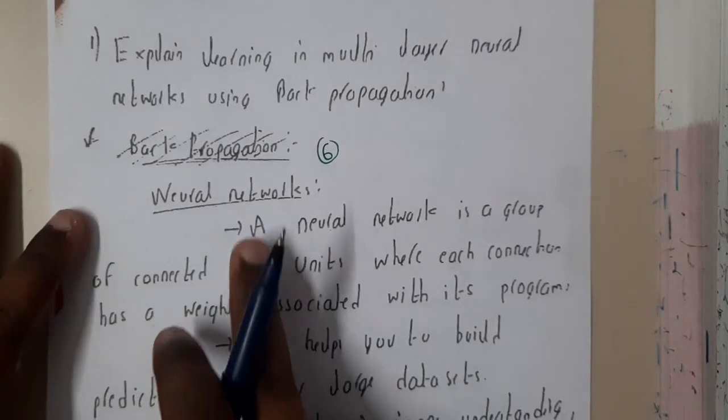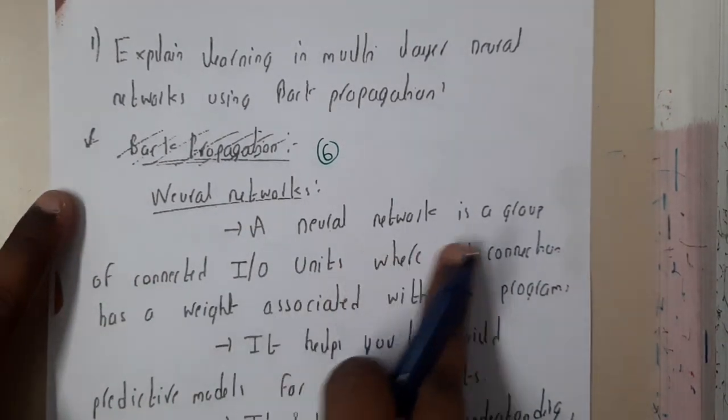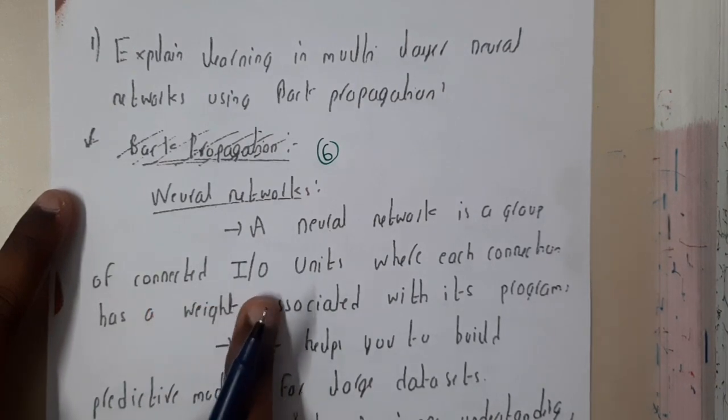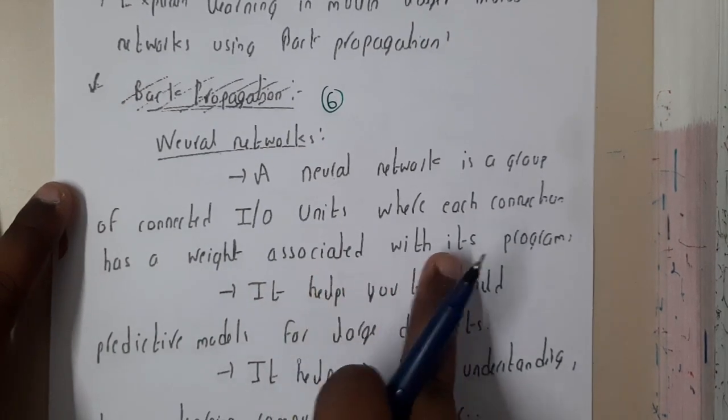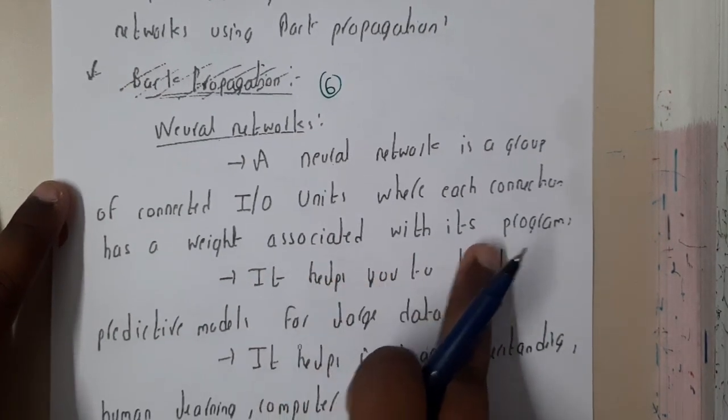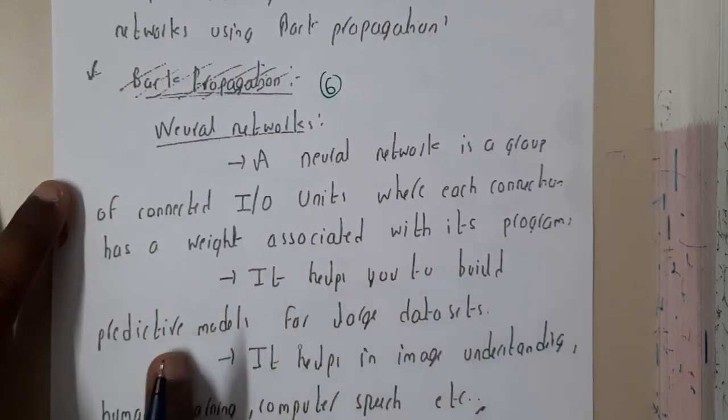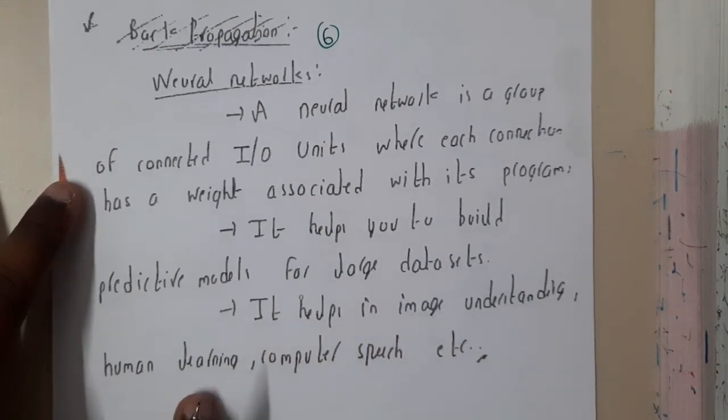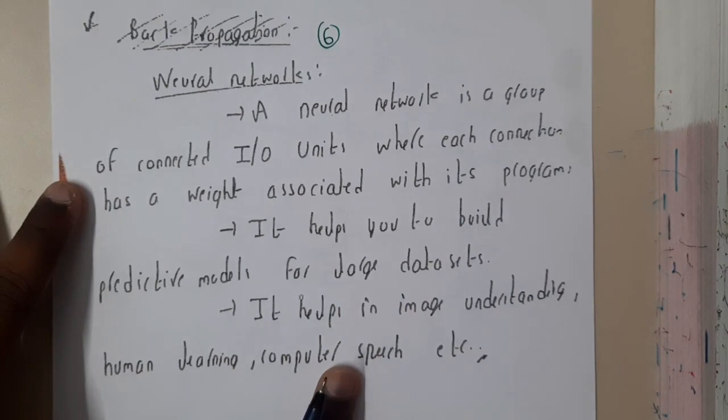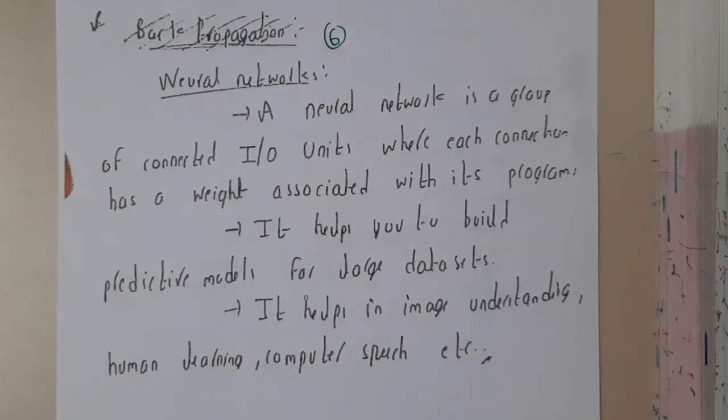Let us initially go through the theory because that will be more than enough. A neural network is a group of connected input output units where each connection has a particular weight associated with it. It helps you to build predictive models for large data sets, and aids in image understanding, human learning, and computer speech recognition.